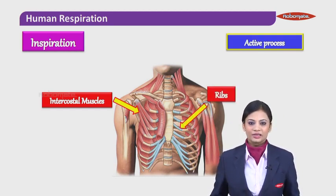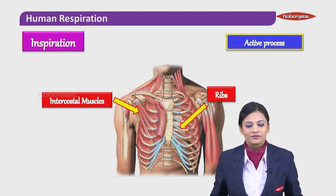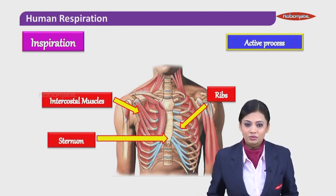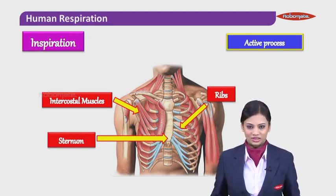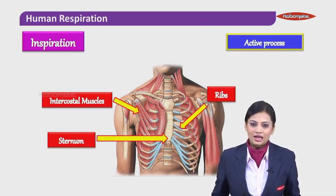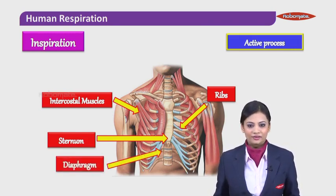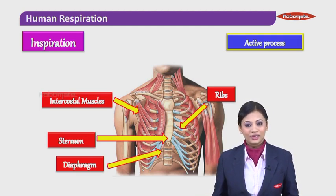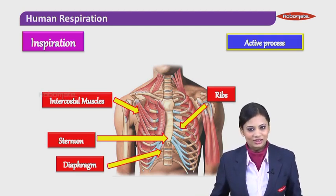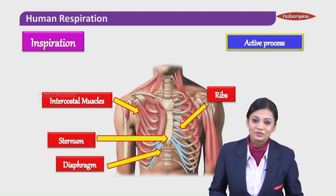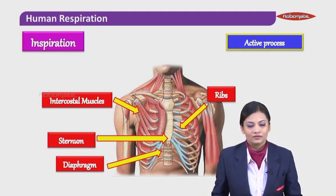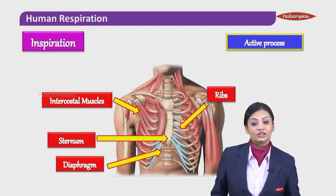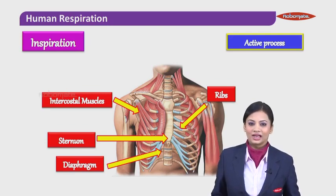Secondly, we will be dealing with your ribcage, meaning your ribs. Third, we will be dealing with the sternum, which is also called your breast bone, and we will be dealing with the lower part of the sternum. Then last, we will be dealing with the diaphragm. The diaphragm is a dome-shaped organ placed below your lungs, separating the lungs from the abdominal cavity.